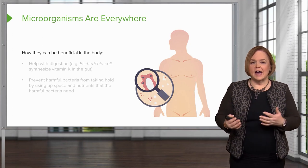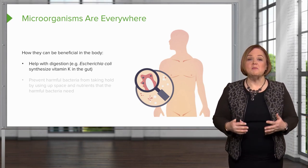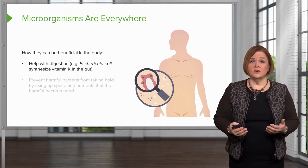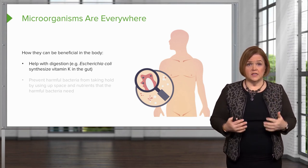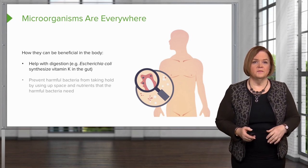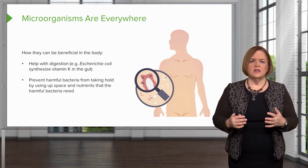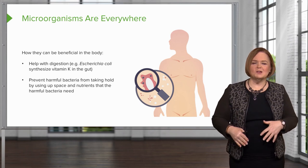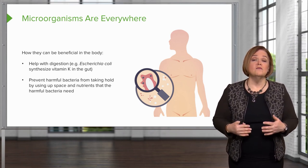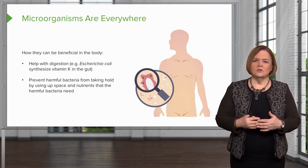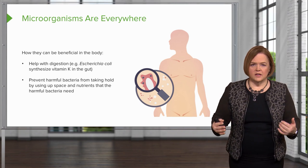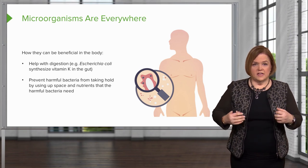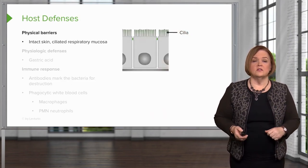Let's talk about how bacteria can be beneficial to the body. E. coli in the gut helps with digestion — we want it there. It helps us synthesize vitamin K, and it can prevent harmful bacteria from taking hold, because good bacteria take up space and nutrients that harmful bacteria need. That's actually the problem sometimes when we kill bacteria with antibiotics — that's how other resistant bacteria kick in. So good bacteria help us by taking up resources and space to prevent resistant organisms from taking over.